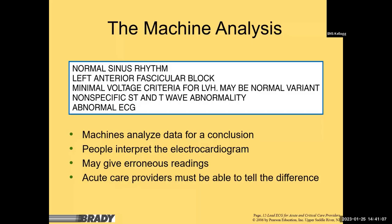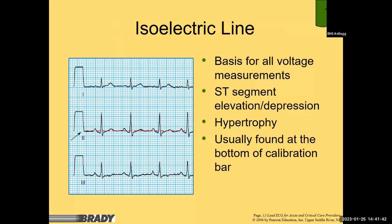The machine analyzes the data — people interpret the rhythm. You are responsible for reading this EKG. Too often the machine gives erroneous readings, like 'inferior myocardial infarction and possible lateral infarct.' Can you have inferior and lateral infarct simultaneously? Probably not, unless there's a major underlying issue. Acute care providers must be able to tell the difference between a false abnormal readout and an actual problem on the ECG.